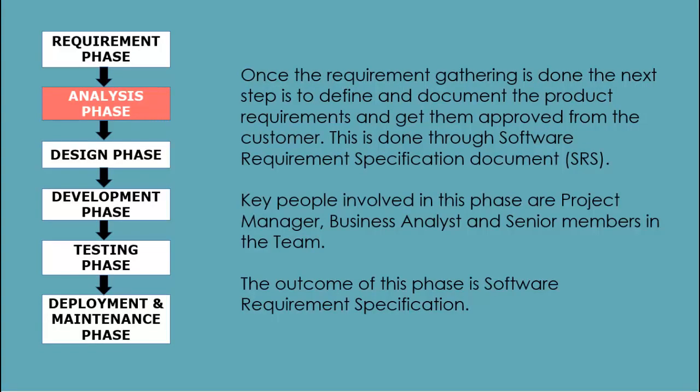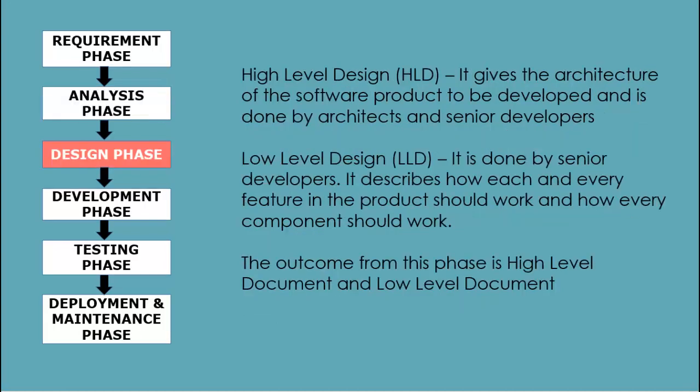Analysis phase: once requirement gathering and analysis is done, the next step is to define and document the product requirements and get them approved from the customer. This is done through the Software Requirement Specification (SRS) document, which consists of all the product requirements to be designed and developed during the project lifecycle. Key people involved in this phase are the project manager, business analyst, and senior members of the team. The outcome of this phase is the Software Requirement Specification.